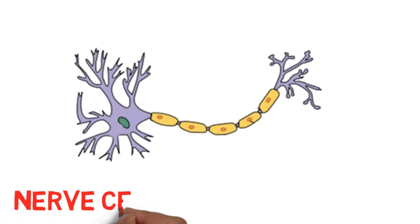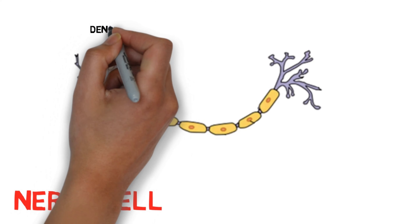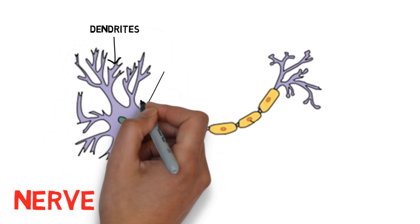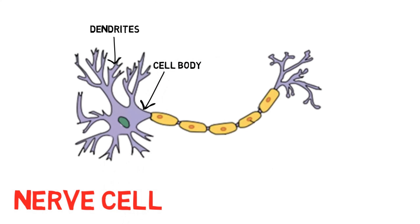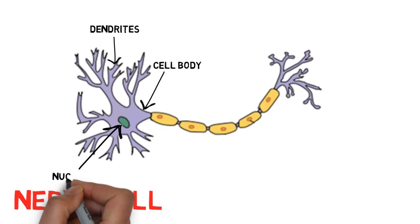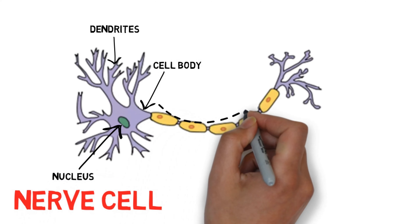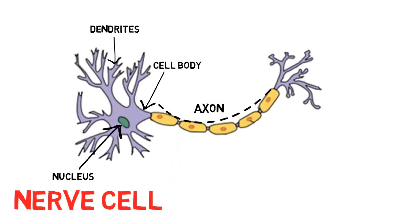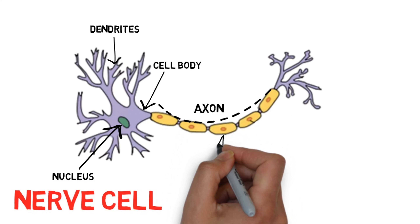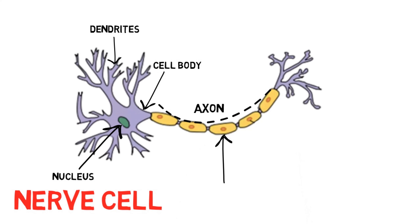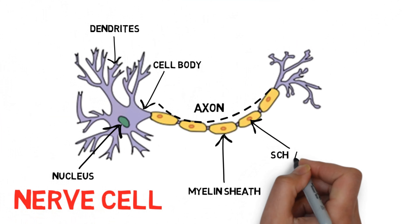This is the structure of a nerve cell which I am sure most of us have seen many times. Discussing the parts, we come to these branches called as dendrites. This is the cell body. This is the nucleus of the nerve cell. This is the axon of the nerve cell, through whose length the nerve impulse travels. This is the myelin sheath — an insulating layer covering the nerve cell. These are Schwann cells that produce the myelin sheath.